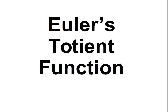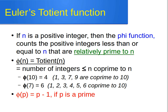Euler's Totient function: imagine we have a positive integer n. The phi function — which is Euler's Totient function — counts the positive integers less than or equal to n that are relatively prime to n.